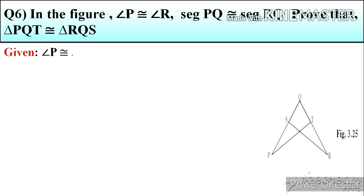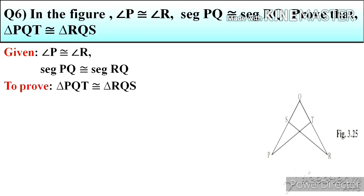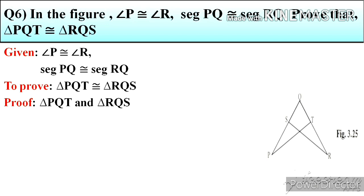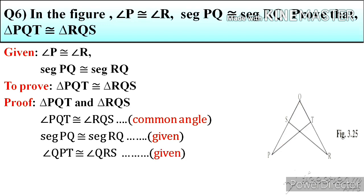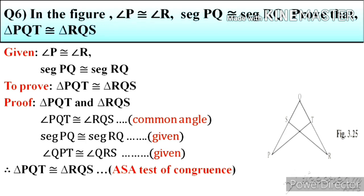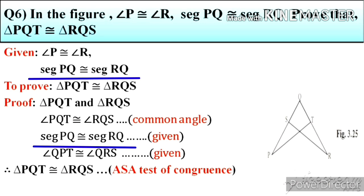Question number 6: In the figure, angle P is congruent to angle R and segment PQ is congruent to segment RQ. Prove that triangle PQT is congruent to triangle RQS. Given information: angle P is congruent to angle R, segment PQ is congruent to segment RQ. In both triangles, angle PQT is congruent to angle RQS — Q is a common angle in both triangles. Segment PQ is congruent to segment RQ — that is given. Therefore, triangle PQT is congruent to triangle RQS by ASA test of congruence.